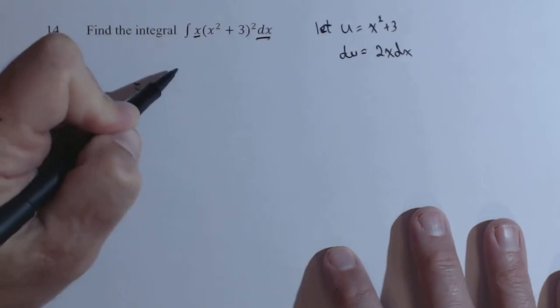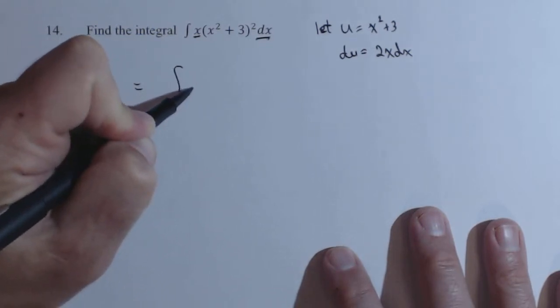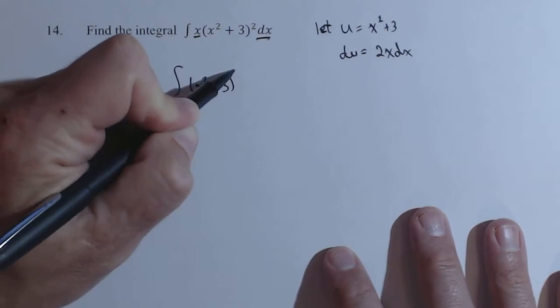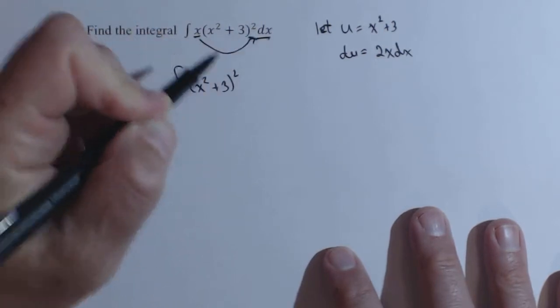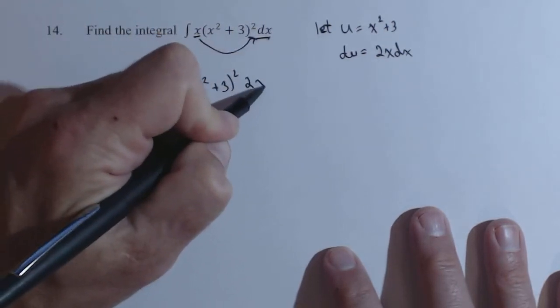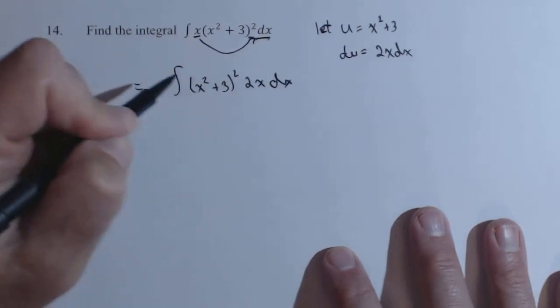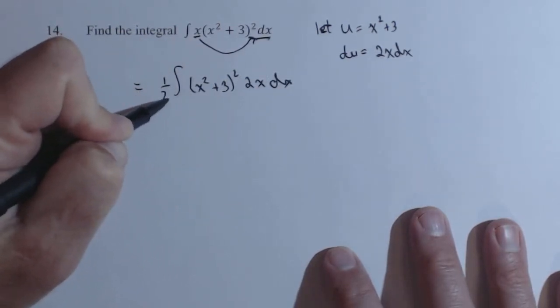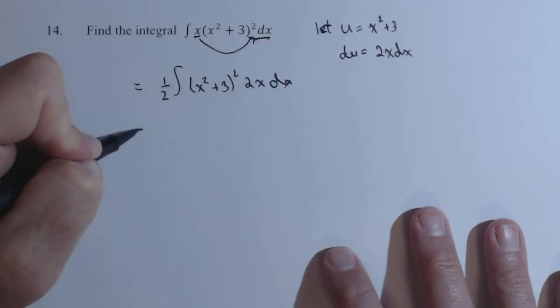So what I'm gonna do is I'm gonna rewrite this as x squared plus three squared. I'm gonna move that x back here, and I'm gonna put the two I want in front of it. So I'm gonna put a one-half outside so that it's exactly still equal to what I had before.